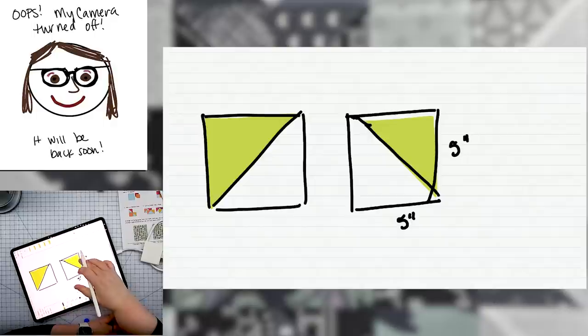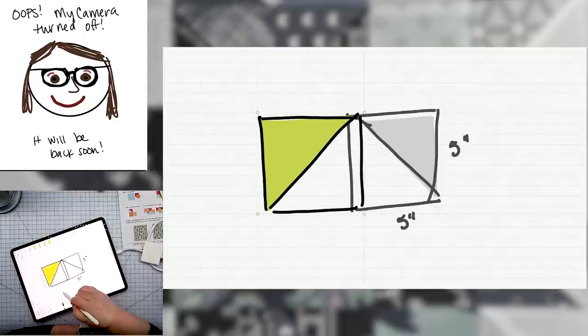And then we would make one at a time half square triangles by sewing on the diagonal and cutting off the excess and pressing them out. And that would give us our flying goose unit.